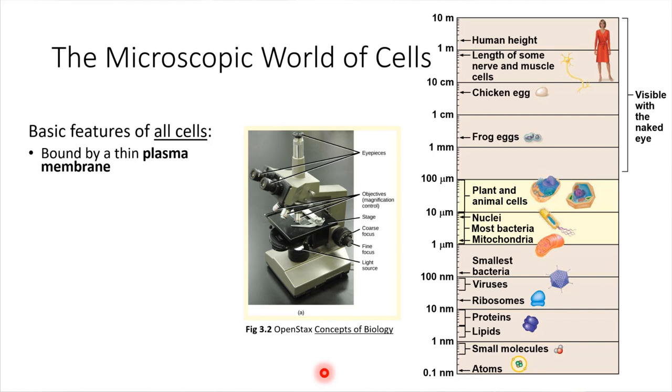Another thing that all cells have is, if we move to the inside just inside the plasma membrane, there's this thick fluid. All cells have this thick fluid called cytosol. It's a soupy suspension. There are lots of things floating in the cytosol. We'll be looking at all the different things that are floating in the cytosol coming up in this chapter.